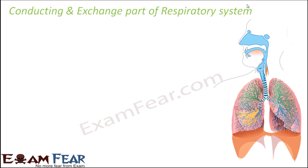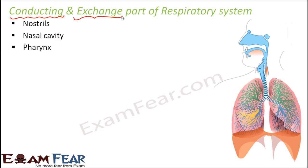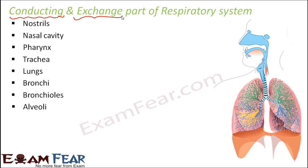Based on whatever we have learned about the different parts of the respiratory system, we can say that certain parts act as conducting parts — they just help in conducting, providing a path, helping the air move from one place to another. And there are certain parts of the respiratory system which actually help in exchange of gases — the exchange of oxygen and carbon dioxide. Let us see which parts fall under the conducting category and which fall under the exchange category.